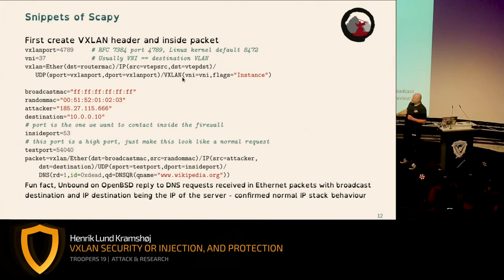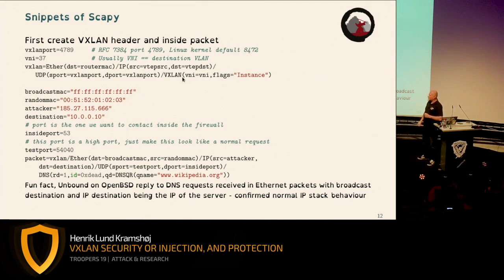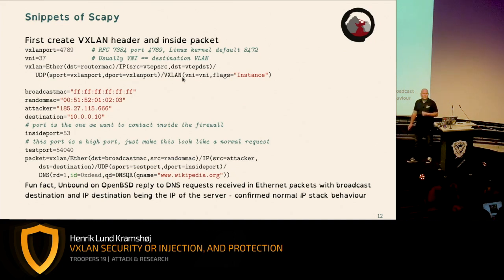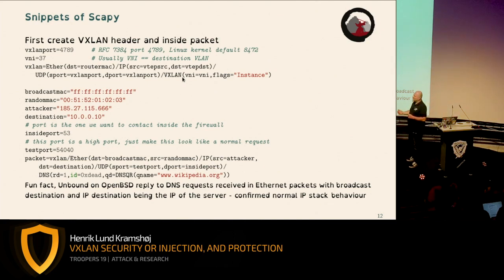We can do single DNS requests — great. But what about receiving the response? The response comes from another IP to the port we set as source port in the request. I set up a listener in Python: it would be UDP, coming to port 54140, probably from the network I'm attacking — because the firewall NATs outgoing traffic, so I won't receive it from 10.0.0.10 but from the firewall's IP in front of the server.